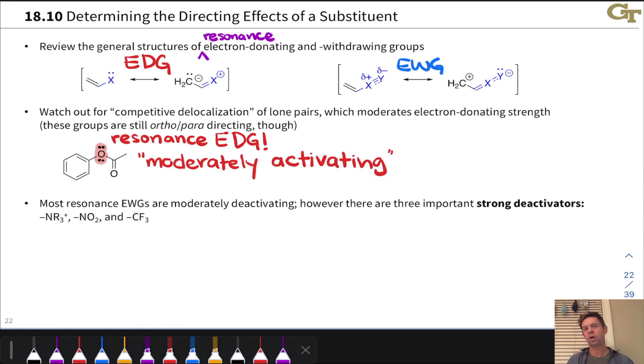It's just what we will call moderately activating. It's not as strongly activating as, for example, a hydroxyl or an alkoxy group because of the withdrawing effect of the carbonyl. There is some competitive delocalization of the electron density of the lone pairs into the carbonyl, but that group is still electron-donating overall. We can still use this heuristic that it's a resonance-donating group because it fits the pattern, so it's an ortho-para director.